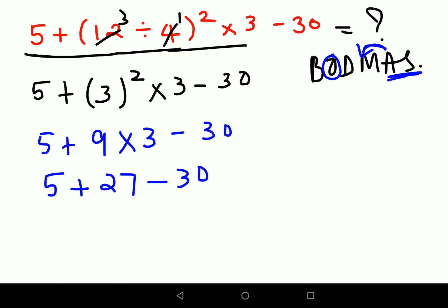Now when you have addition and subtraction together, you go from left to right because both of them hold the same importance. Same goes for division and multiplication. Just when your question has just simple division and multiplication, or it has just addition and subtraction, then in that case you go from left to right.